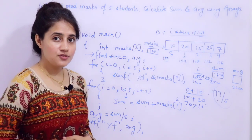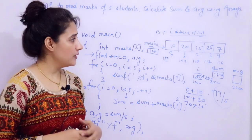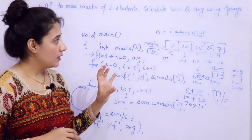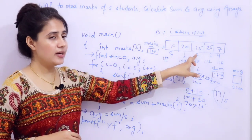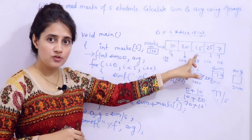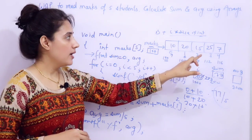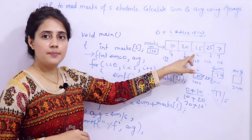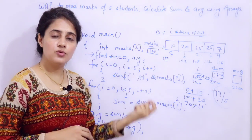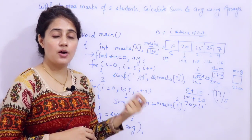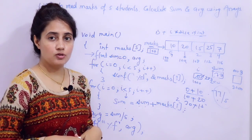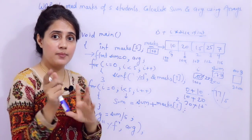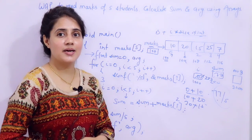That is it for this video. In the next video, we will see how to read 10 elements of an array and count how many odd numbers and how many even numbers, then print. We will see this program in the next video. Till then, bye-bye, take care.